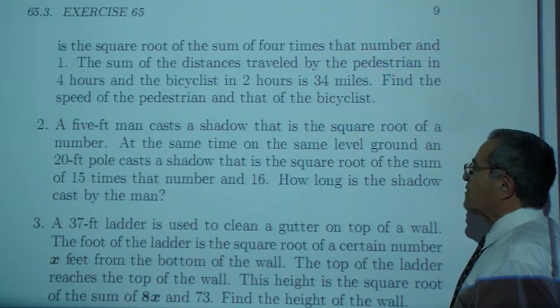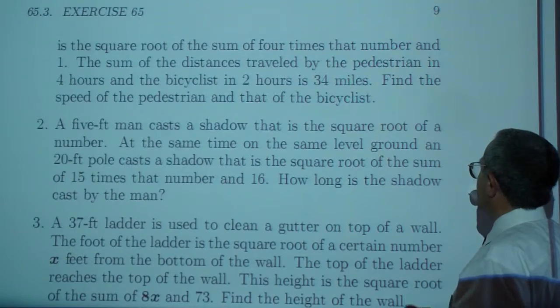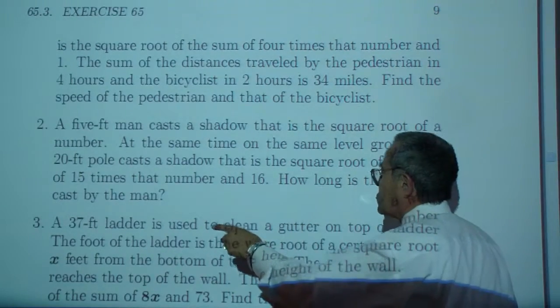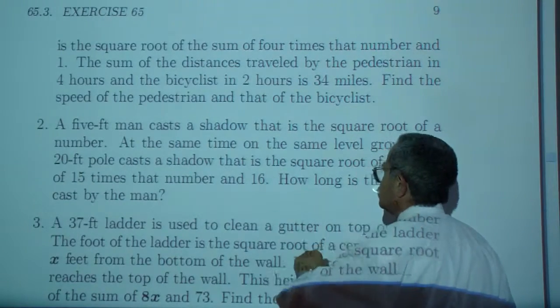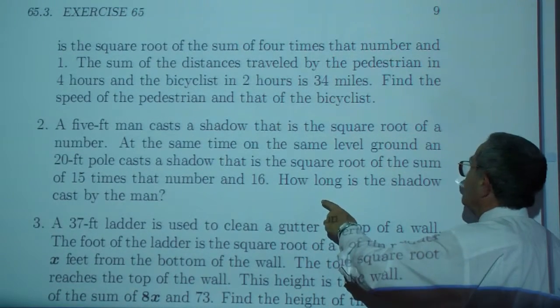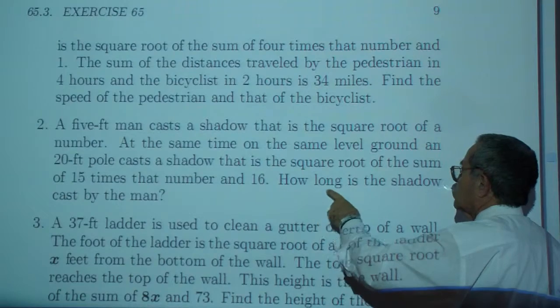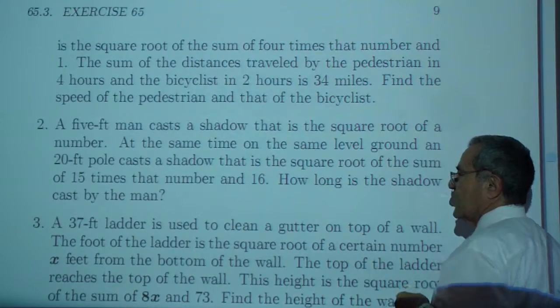a 20-foot pole casts a shadow that is the square root of the sum of 15 times that number and 16. How long is the shadow cast by the man?